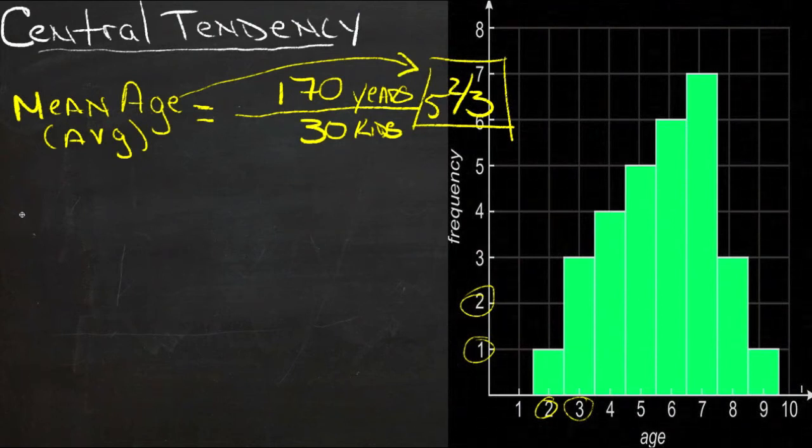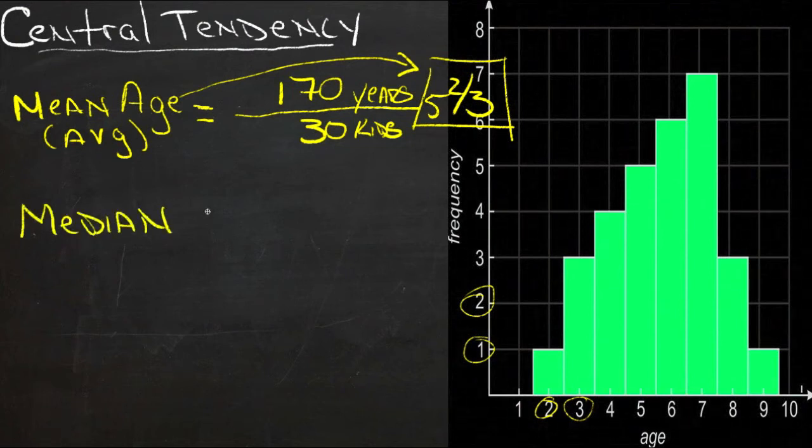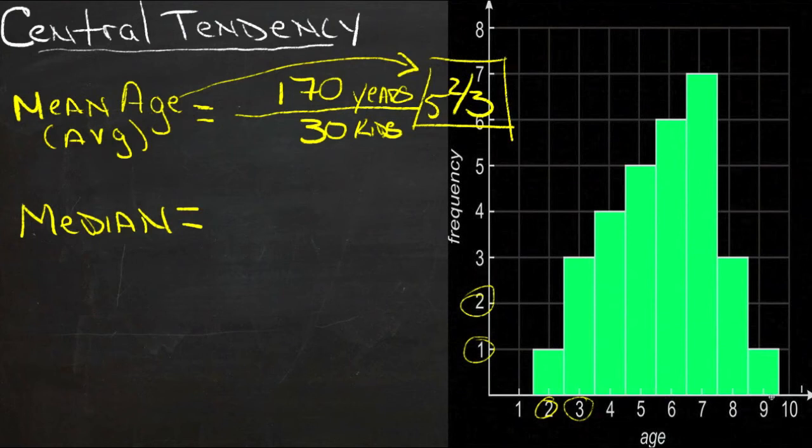So now the next thing we need to find is the median. The median age would be the age that's right in the middle. So what we need to do is figure out where the middle of the number of kids is. Of all the children, there's 30 kids,